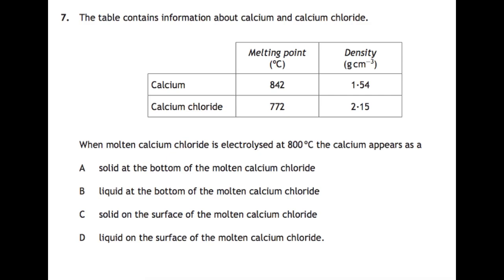Question seven: the table contains information about calcium and calcium chloride. Calcium melts at 842 degrees and has a density of 1.54 grams per centimetre cubed. Calcium chloride has a lower melting point at 772, but is more dense at 2.15. When molten calcium chloride is electrolyzed at 800 degrees, the calcium appears as what? At 800 degrees, your calcium chloride has melted and you're electrolyzing it, splitting it into calcium and chlorine. Chlorine will be a gas. At 800 degrees, calcium has not melted yet, so it will be a solid. So only A and C are options there. However, it is less dense than the calcium chloride, which will be a liquid, and that means it will float on the top of the calcium chloride. So C is your answer.